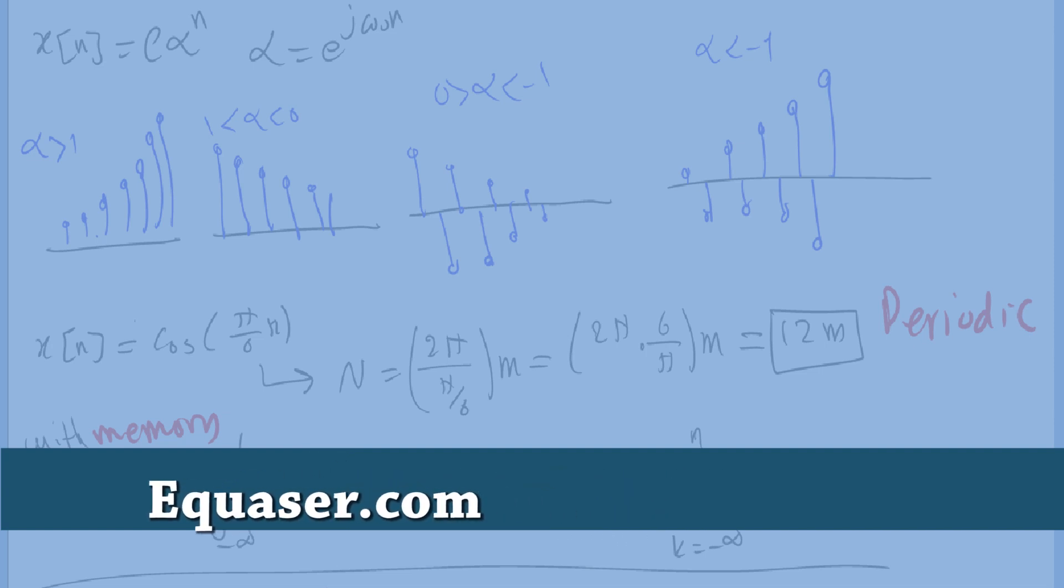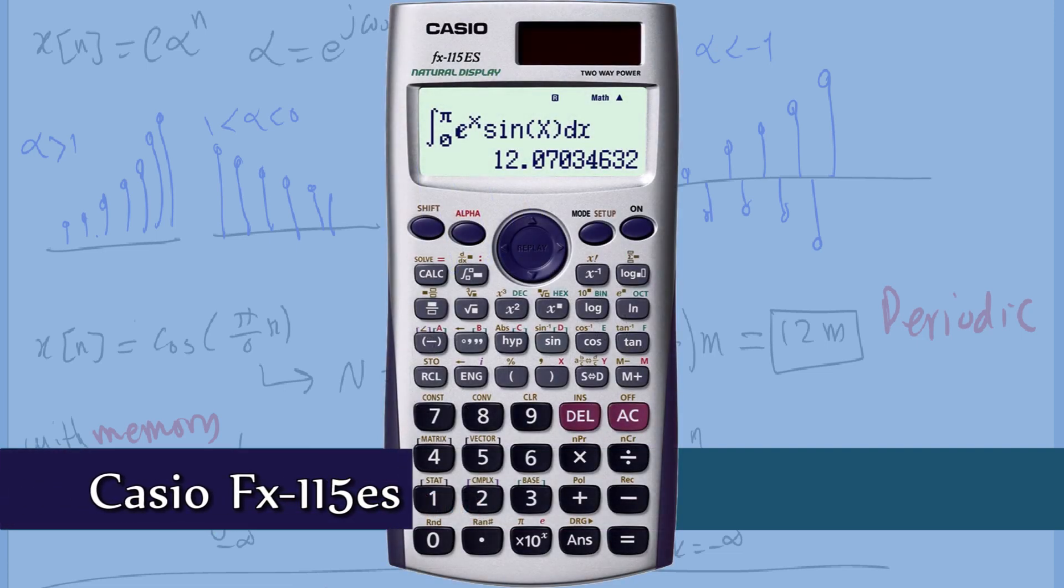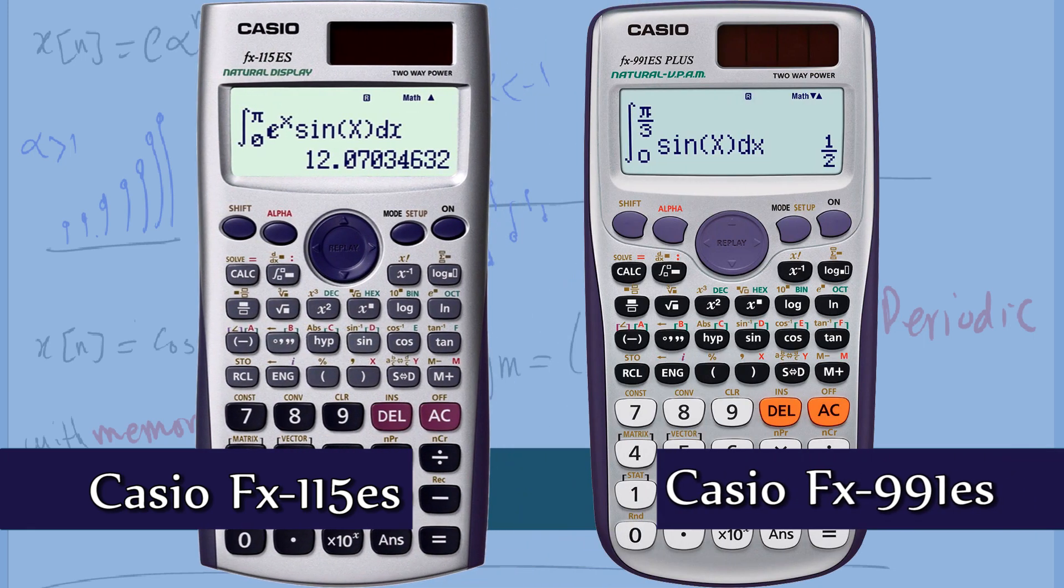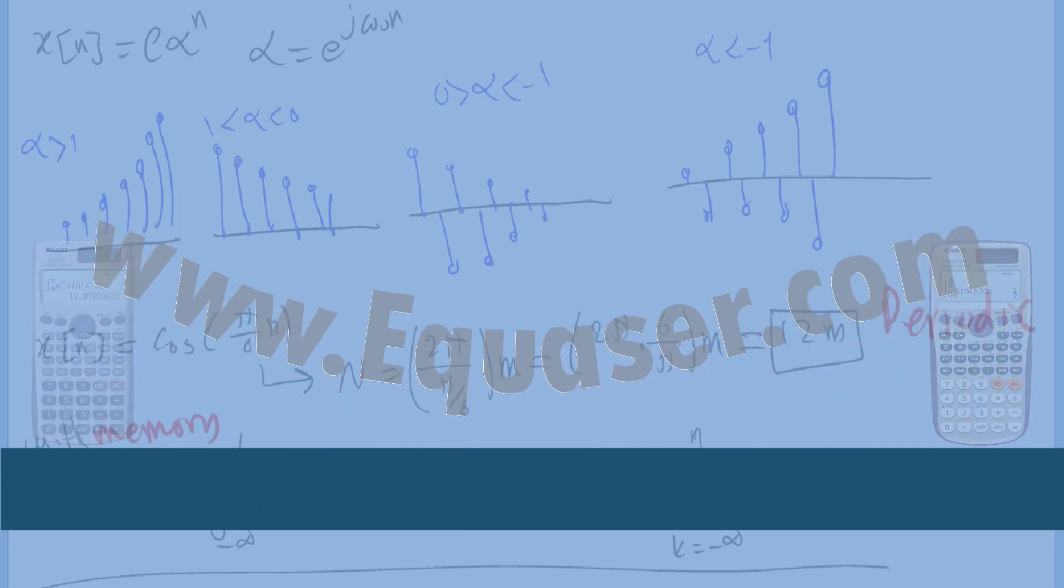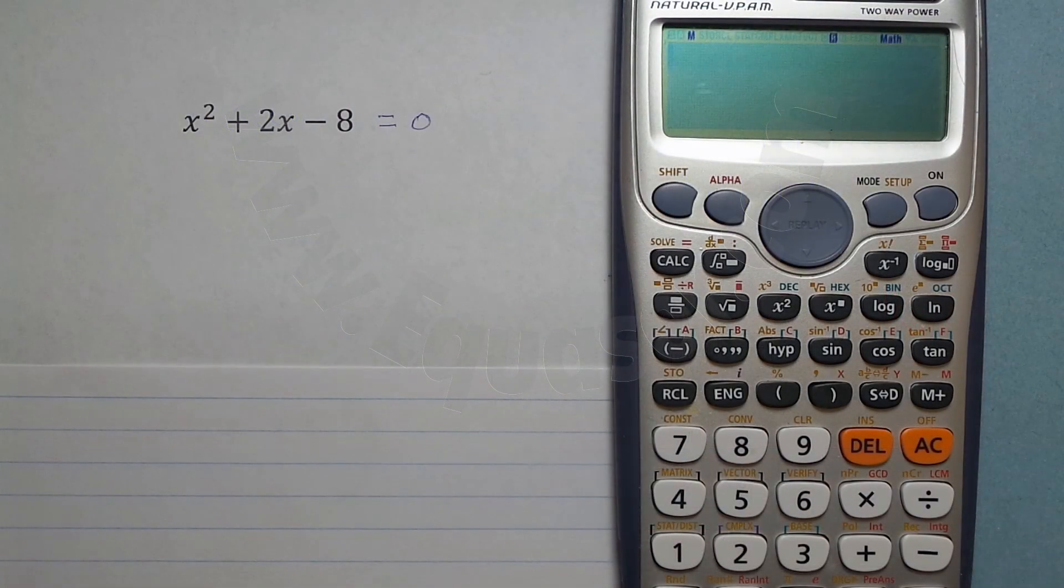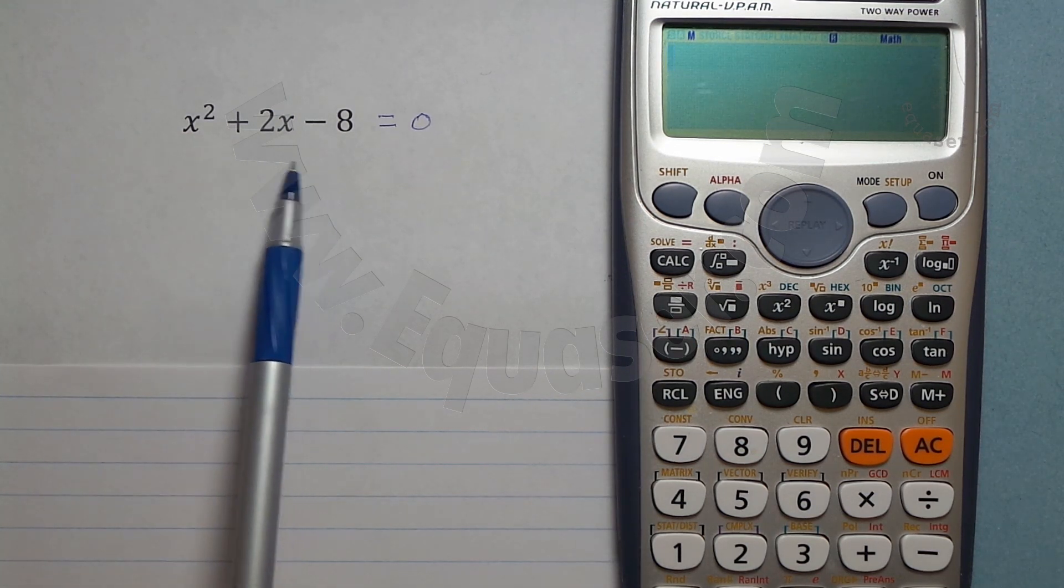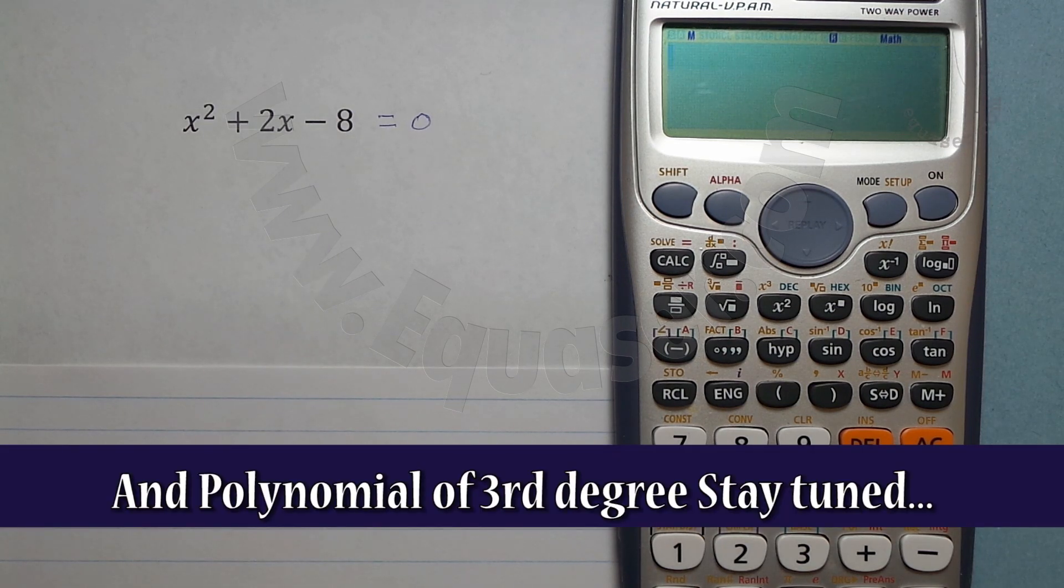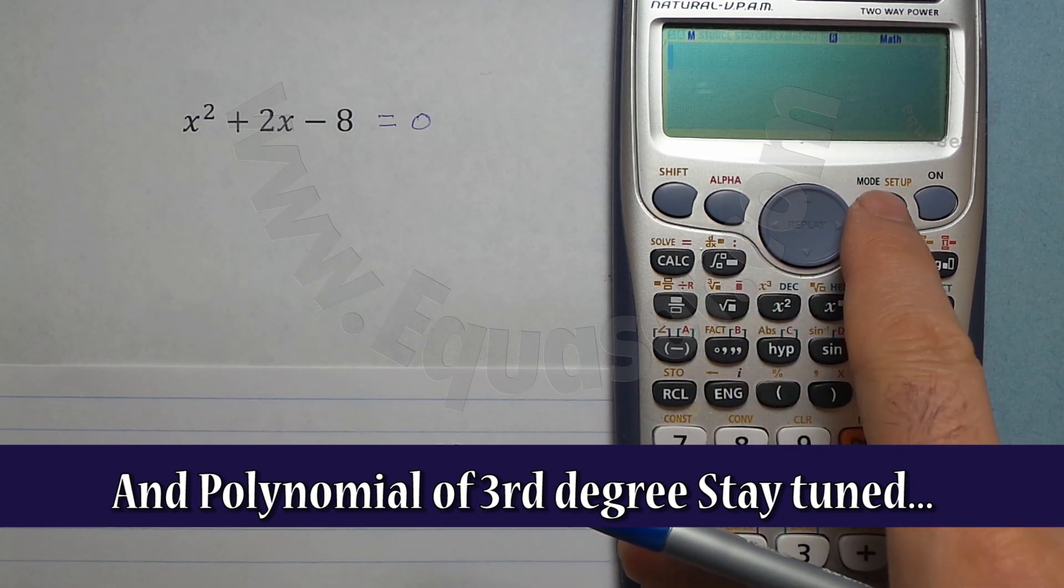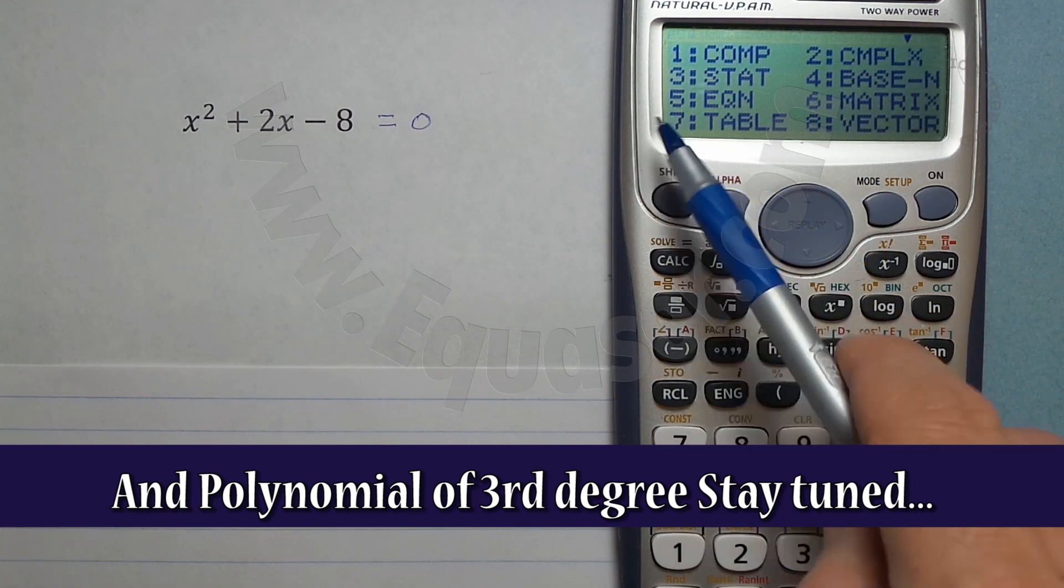Welcome to a tutorial from Equazor.com. This tutorial covers Casio scientific calculators FX-115ES and Casio FX-991ES plus C. In this tutorial, we are going to use this Casio calculator to find the value of X or solve for X in this polynomial of second degree.